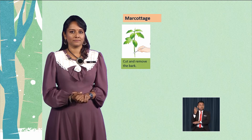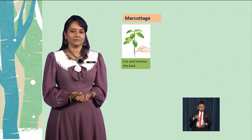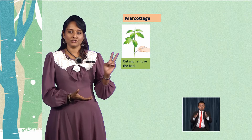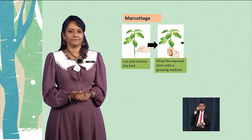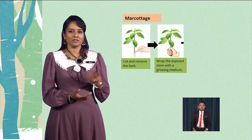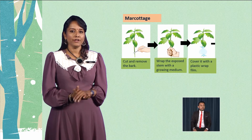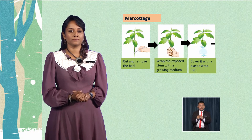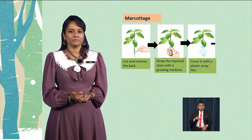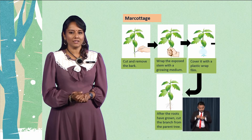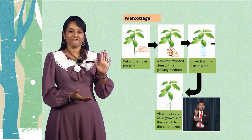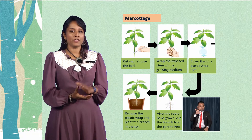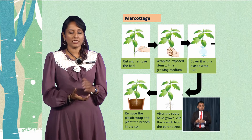The marcotage process: Step one — cut and remove the bark. Step two — wrap the exposed stem with the growing medium. Step three — cover it with a plastic wrap film. Step four — after the roots have grown, cut the branch from the parent tree. Step five — remove the plastic wrap and plant the branch in the soil.